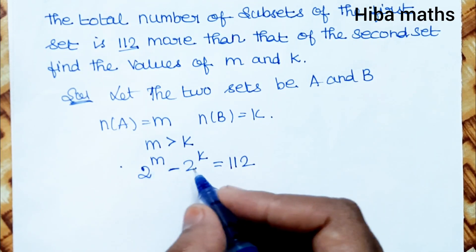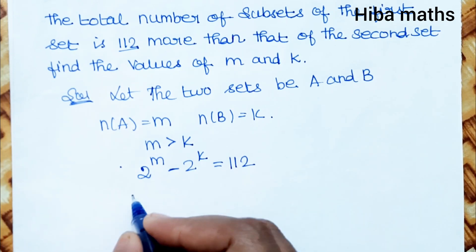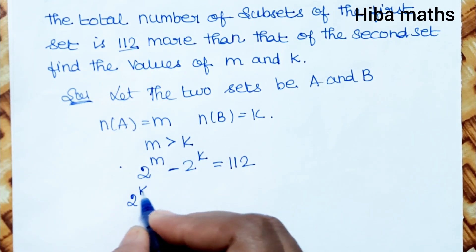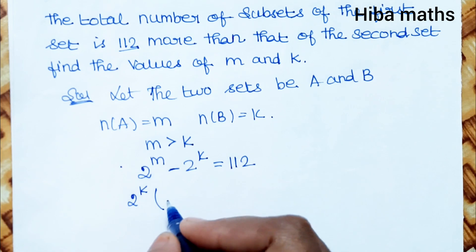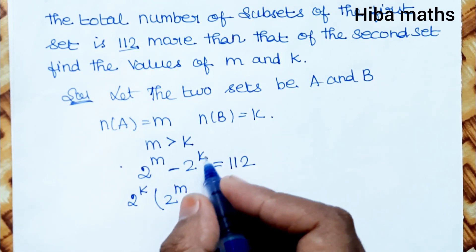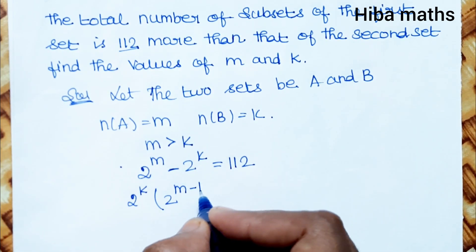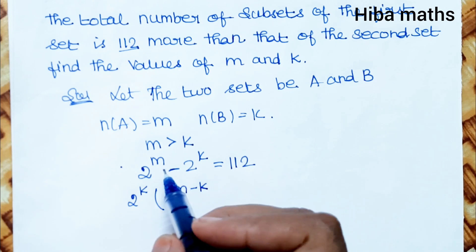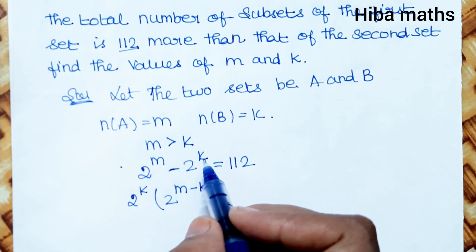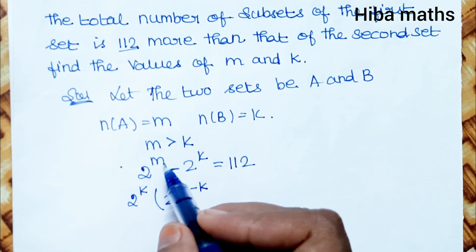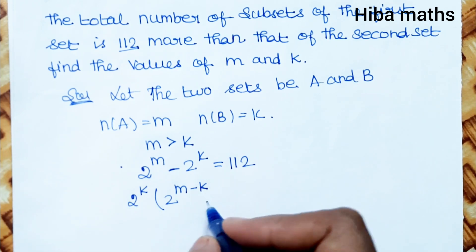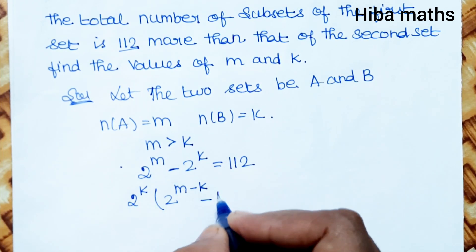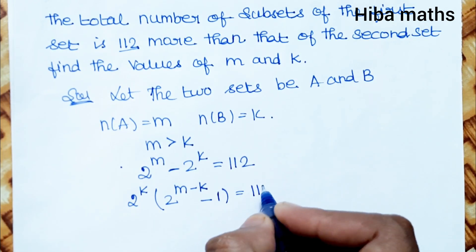2^M and 2^K have the same base, so take 2^K common. You solve 2^K(2^(M-K) - 1) = 112. The minus 1 value gives us 2^K(2^(M-K) - 1) = 112.